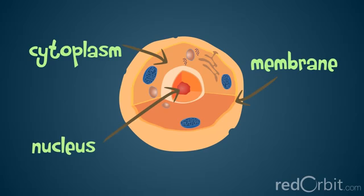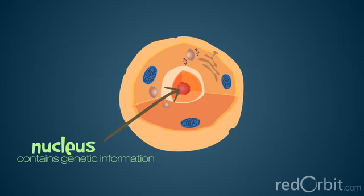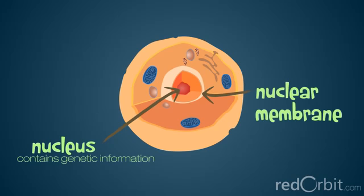The nucleus is the part of a cell that contains the genetic information. The nucleus is surrounded by a nuclear membrane that, like the cell membrane, makes a boundary around the nucleus.